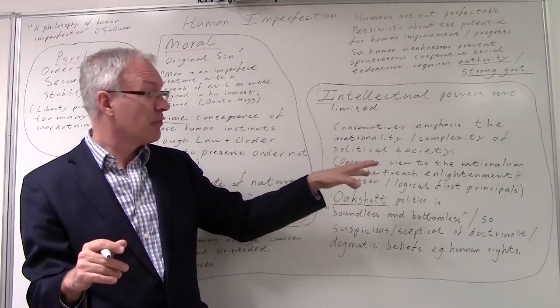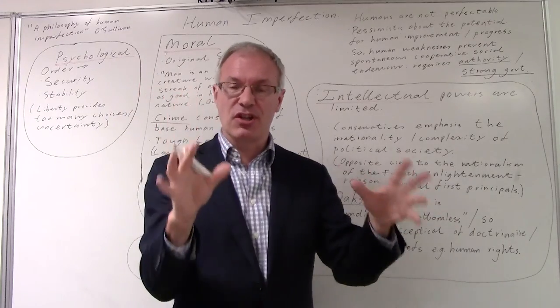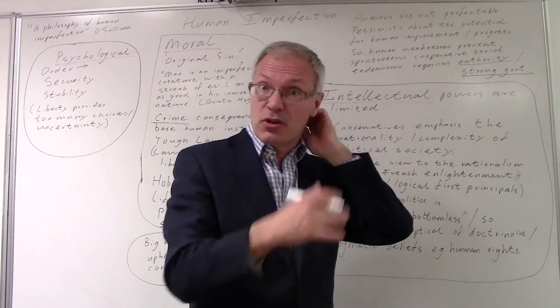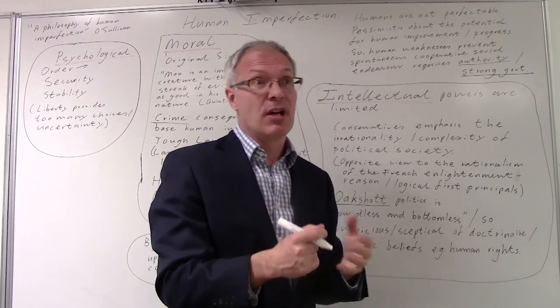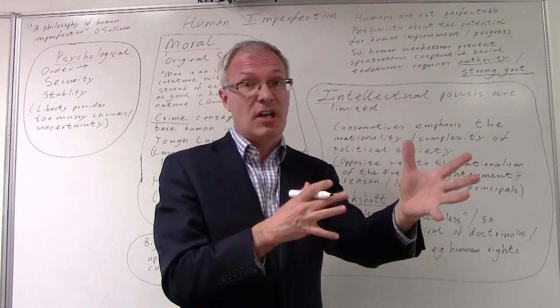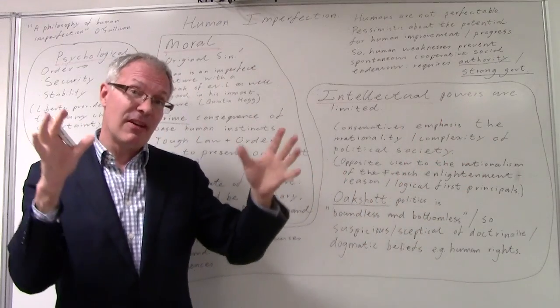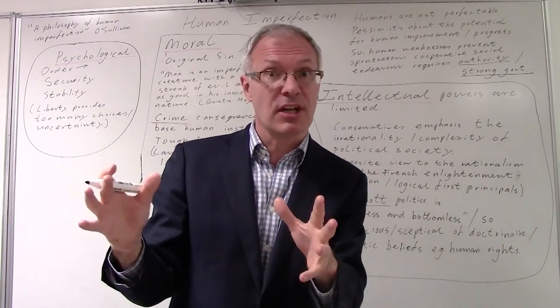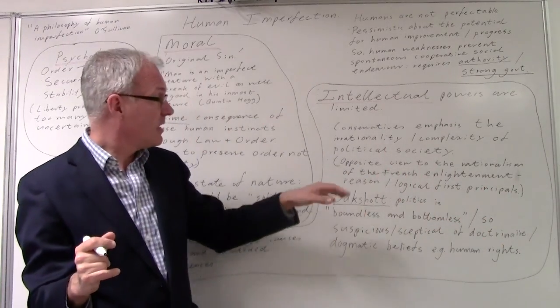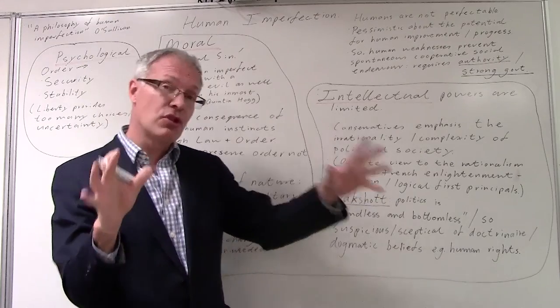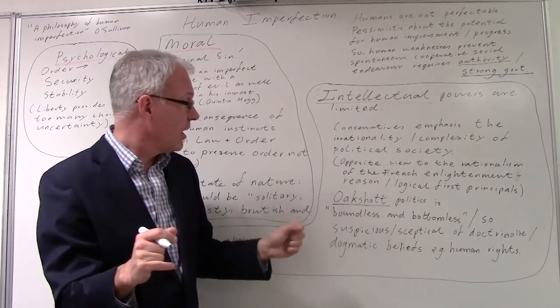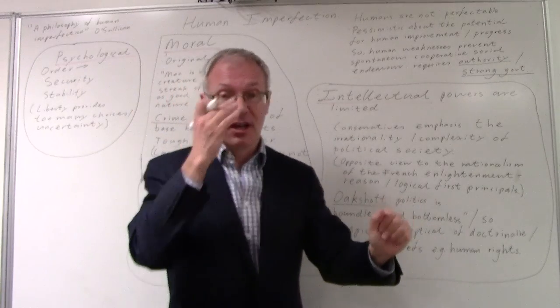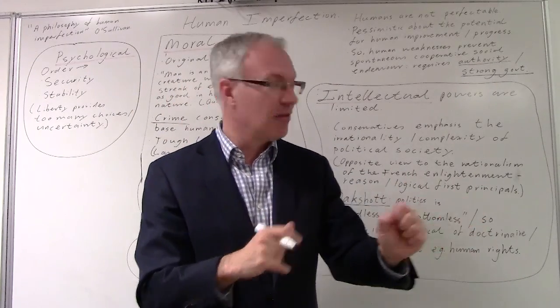It's the opposite really of the view of the French Enlightenment. The French Enlightenment, to counteract superstition and religious views at the time, placed a great deal of emphasis on rationalism, unlike perhaps the Scottish or English Enlightenment. It emphasizes reason, logical first principles, and that you could produce a better society from this. The French Revolution was part of that. Well of course Burke was highly critical of that, as were other conservatives.